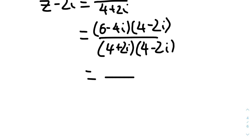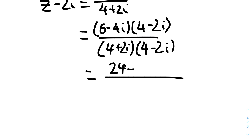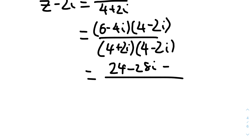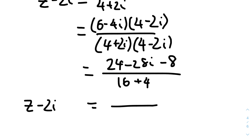Expanding the numerator: 6 × 4 = 24. The imaginary terms: 6 × (-2i) + (-4i) × 4 gives -12i - 16i = -28i. The last term: -4i × -2i = 8 × (-1) = -8. For the denominator, using difference of two squares: 4² + 2² = 16 + 4 = 20. So we get z - 2i = (24 - 8 - 28i) / 20 = (16 - 28i) / 20.